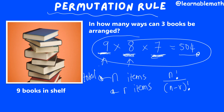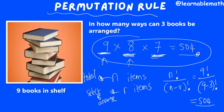Here, n stands for the total number of items and r stands for those we select and arrange. So I want to arrange three books from nine — this can be done in nine factorial divided by (nine minus three) factorial, which still gives us the same answer of 504. Using the formula is quite easy and fast.